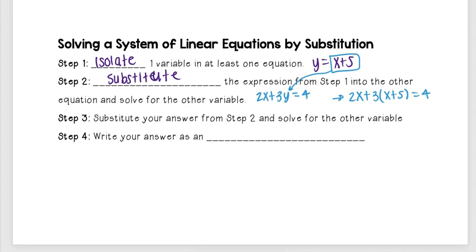After that, we're going to substitute my answer from step two and solve for the other variable. And then we're going to write our answer as an ordered pair. Because as you recall from yesterday, our solution is really a point on the graph. It's that point where they intersect. So our answer here, even though we're not graphing it, our answer is still going to be that ordered pair because we're telling where both equations cross when we graph.